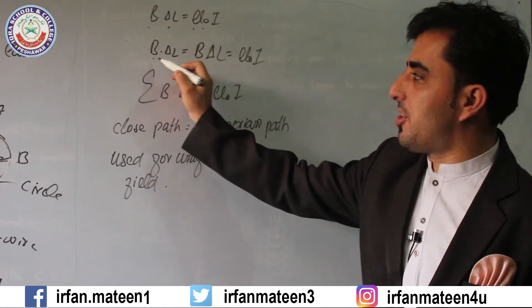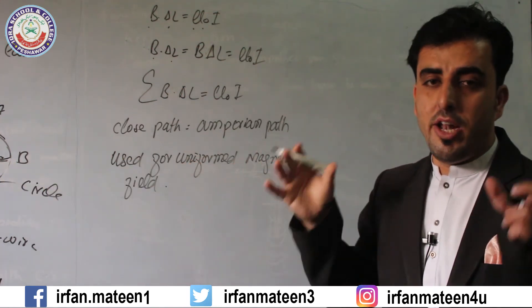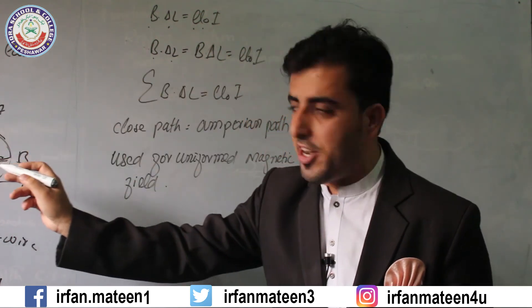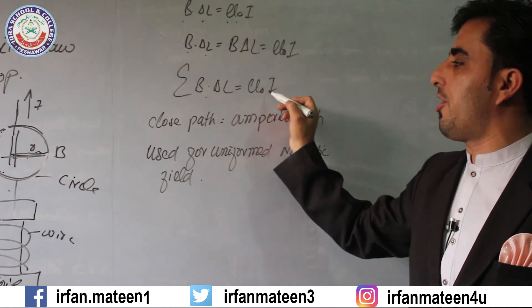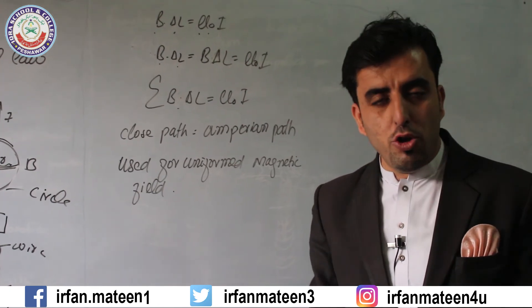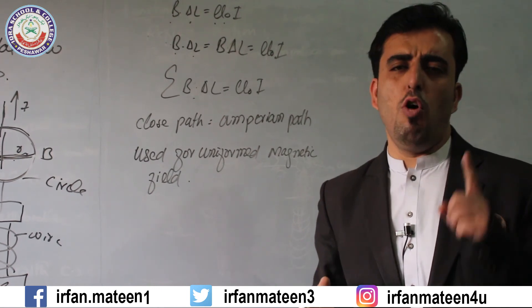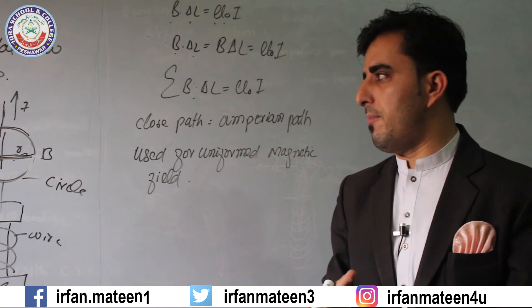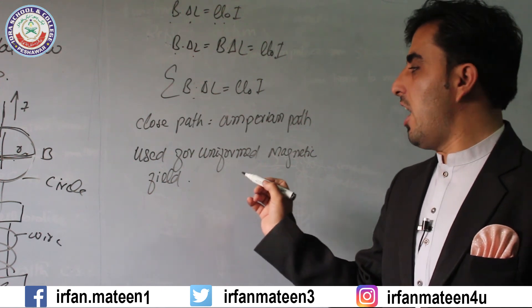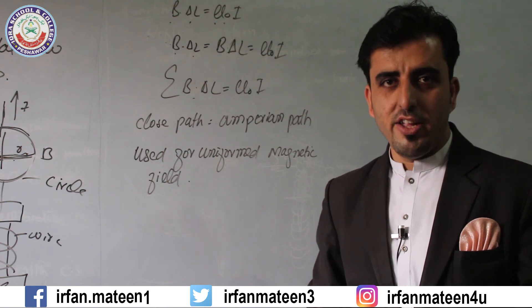The summation form of Ampere's Law is: the summation of B dot delta l equals mu naught times I. This is basically used for a closed path — it is not used in an open path. In daily life applications, Ampere's Law is only applicable for a closed path, also called an Amperian path. It is also used for a uniform magnetic field. That's enough for today, thank you.